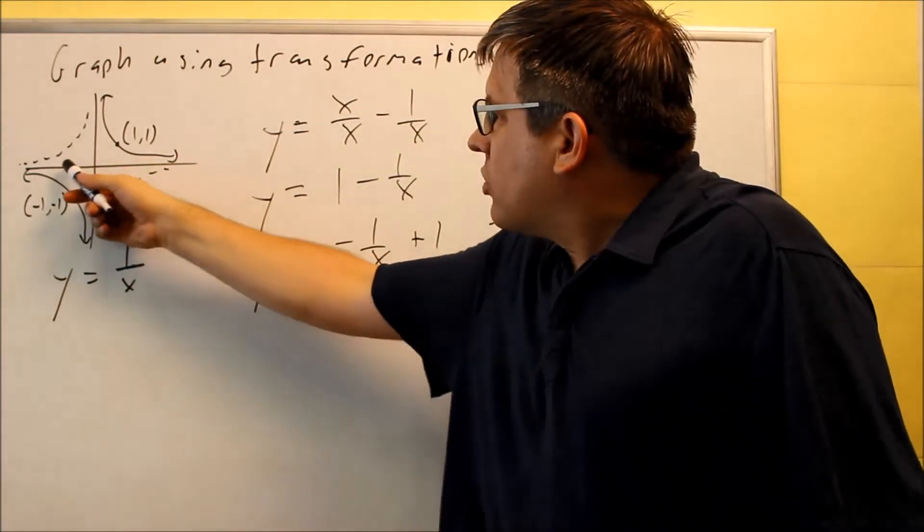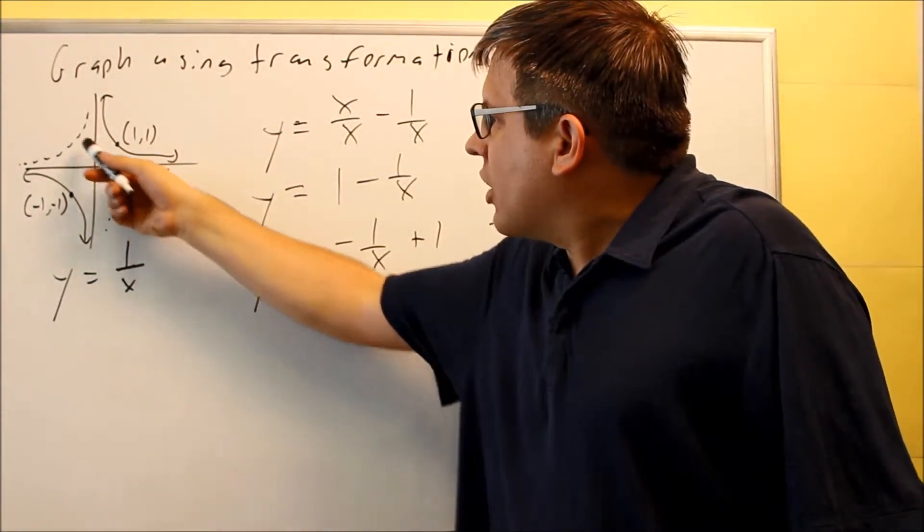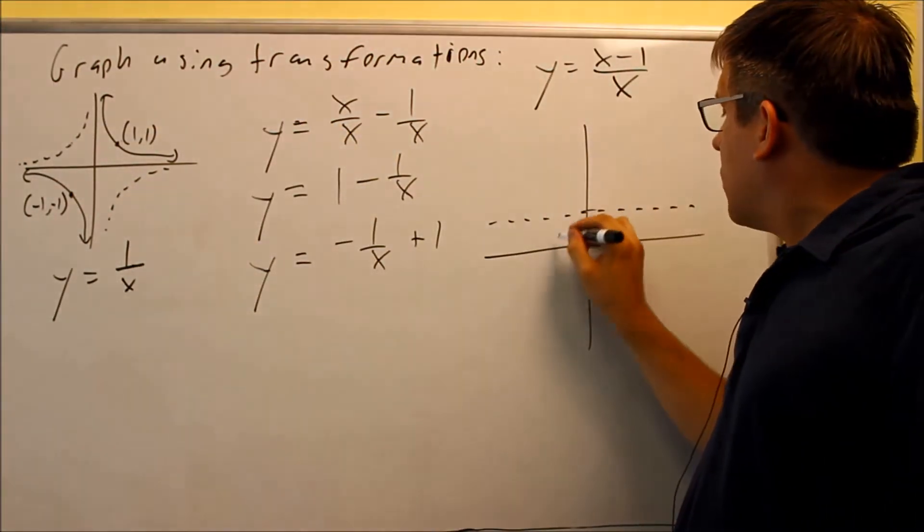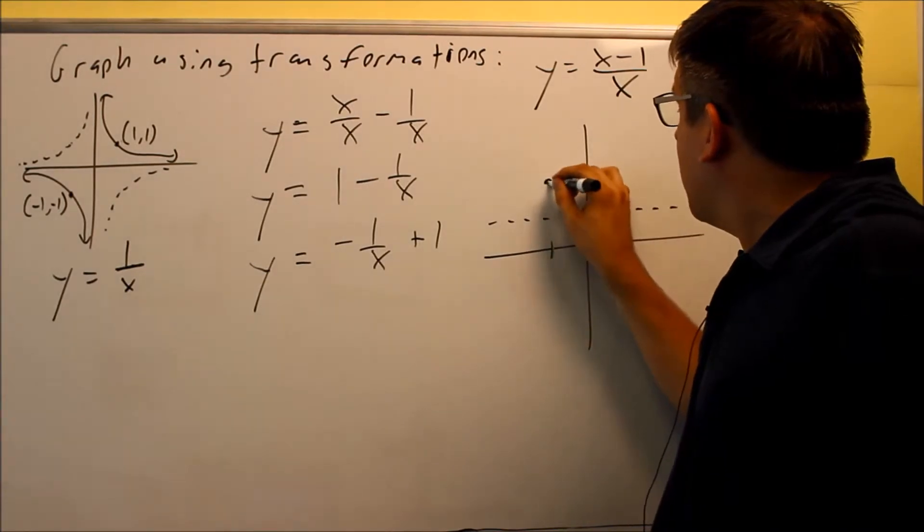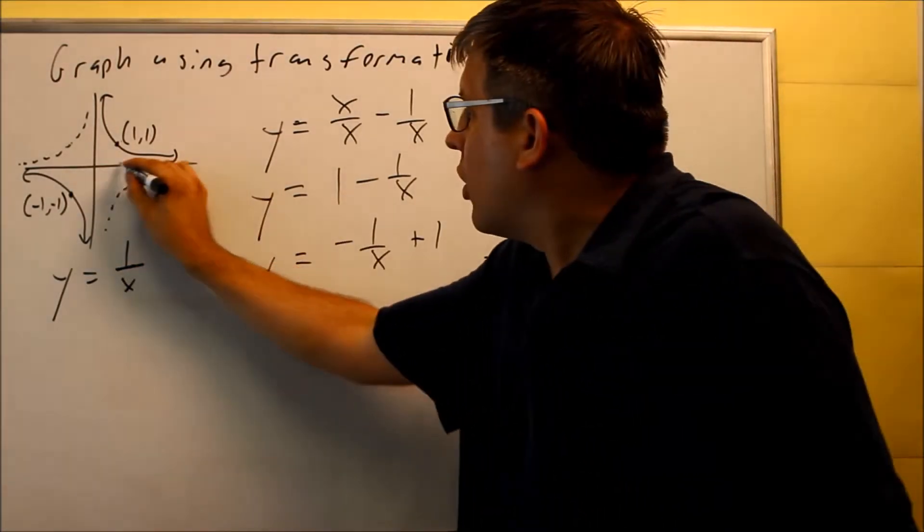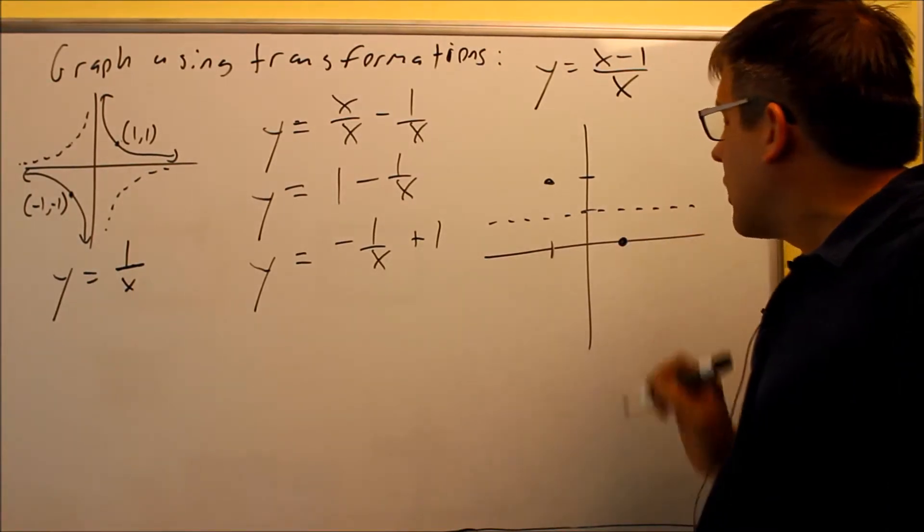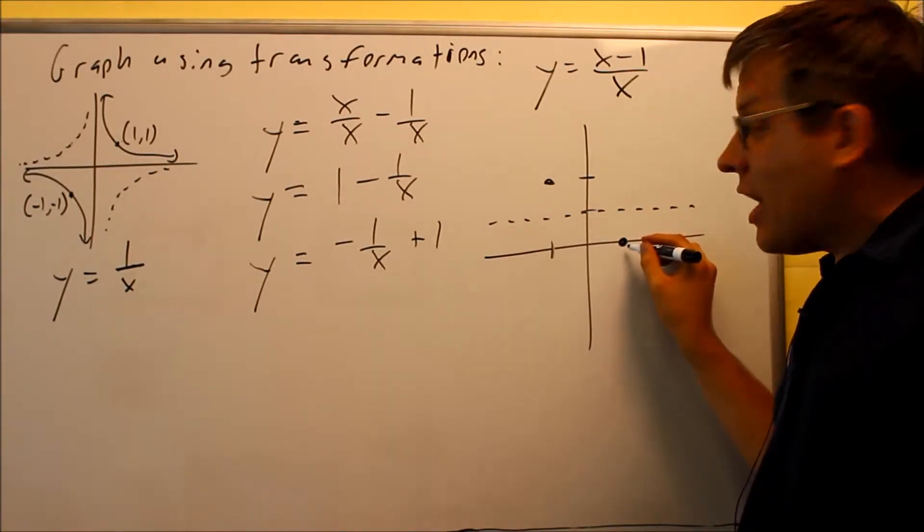I'm going to go one to the left and up one to get the dot right here because it's moved over to that. From here, I'm going to go one to the left and up one, get a dot right there. The other one, I go one to the right and down one. One to the right and down one means that it would cross right here on the x-axis.